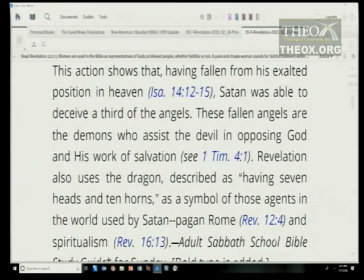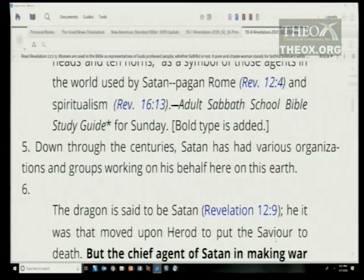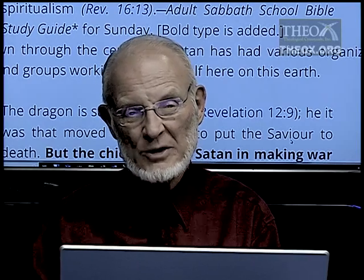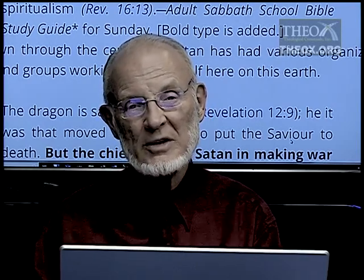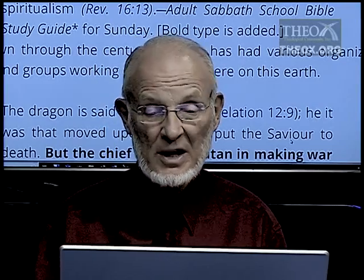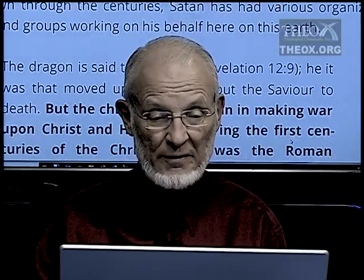Revelation also uses the dragon with seven heads and ten horns as a symbol of those agents in the world used by Satan — pagan Rome (Revelation 12:4) and spiritualism (Revelation 16:13). With all these references, you might want to look them up. The simplest way is to go to our website at theox.org — T-H-E-O-X dot O-R-G — where you can download our handout with all the references right there.